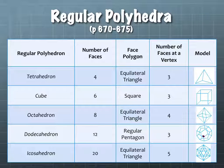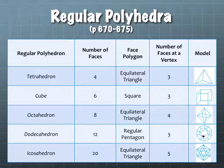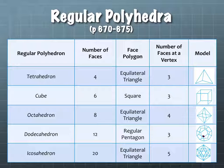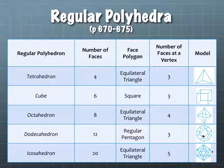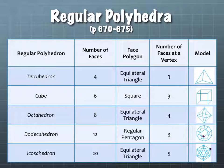Our last one is an icosahedron. 'Icosa' means 20, so an icosahedron has 20 faces, and again they're equilateral triangles. At each vertex, there are five triangles that meet there. This picture is near impossible to look at, but if you look at a corner you might be able to see all five of the triangles meeting there — two along the back and three along the front.